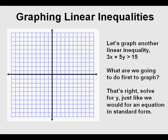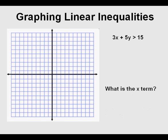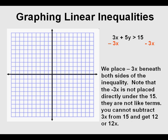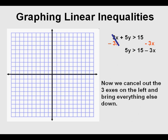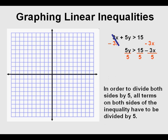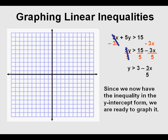We add or subtract the x term. Here we have 3x, so we subtract 3x from both sides. We bring down everything else and get 5y is greater than 15 minus 3x. We then divide by the coefficient of y, which is 5. Canceling and simplifying, we get y is greater than 3 minus three-fifths x. Now we have the inequality in y-intercept form.